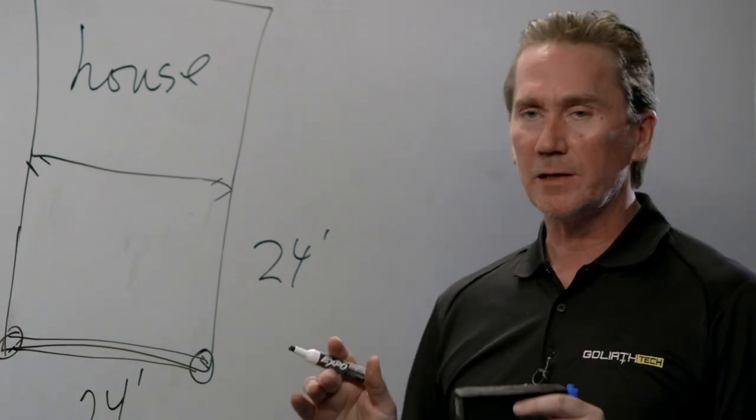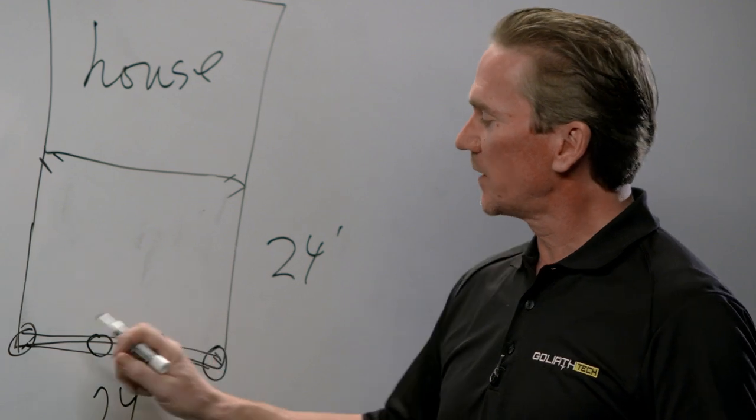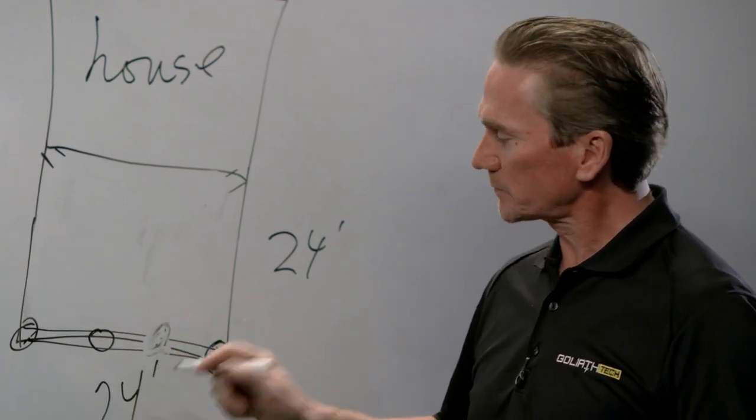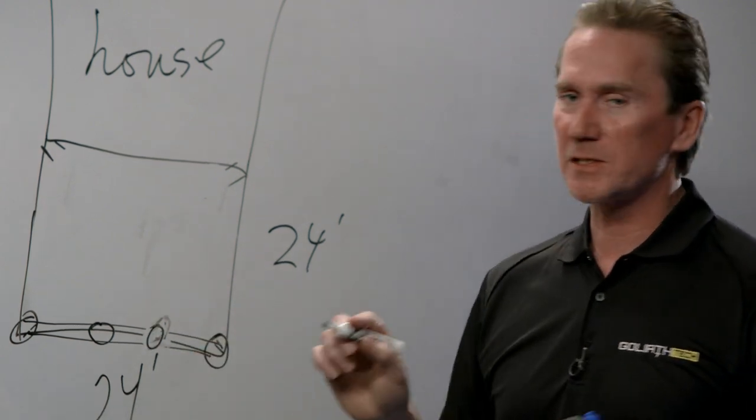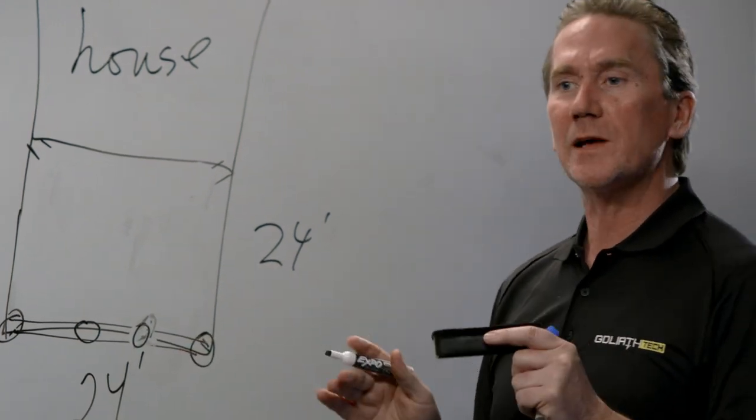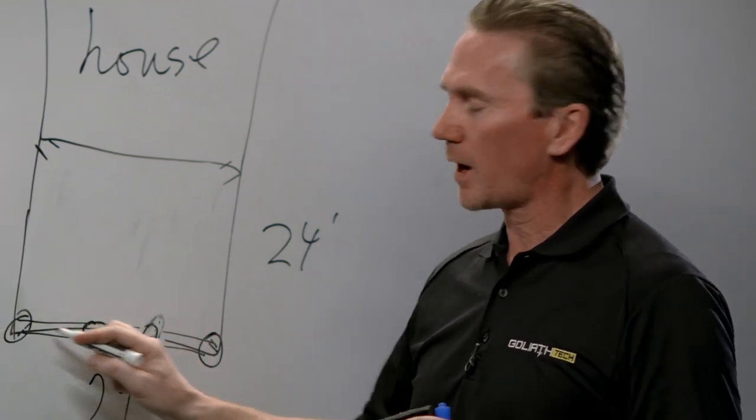And a really good starting point for what we call pile spacing—the distance between the piles—is eight feet. That's a very good starting point because that's always a very good compromise between size and cost of the structure and the pile itself.